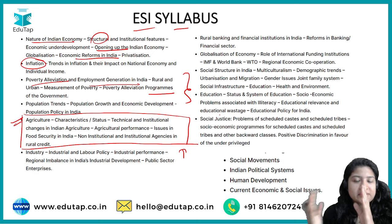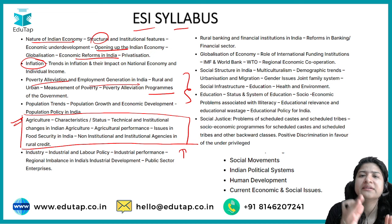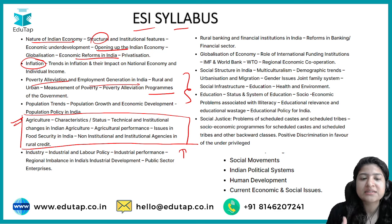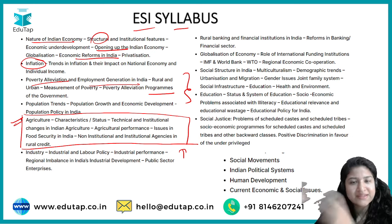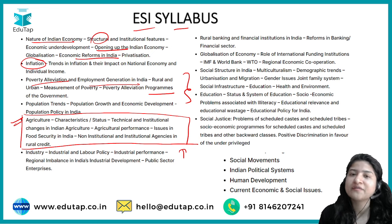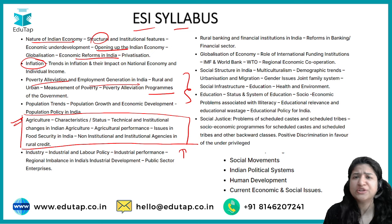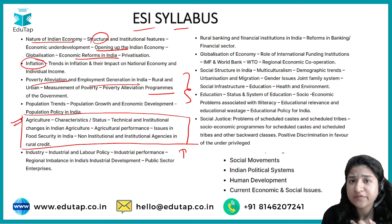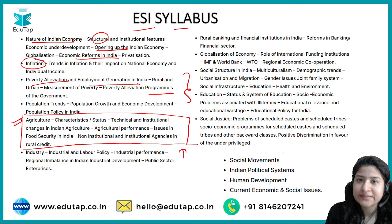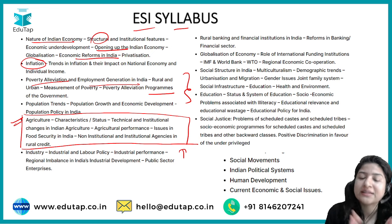Agriculture is also part of the ESI syllabus. A common misconception is that since ARD static holds much of the weightage and current affairs holds only around 8 to 10 percent in ARD, aspirants think they can skip ARD current affairs. But ARD is part of the ESI syllabus, and it has been observed that current affairs related to agriculture — government schemes and other topics — are asked in ESI. You cannot afford to skip ARD current affairs altogether.